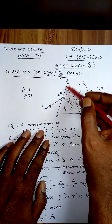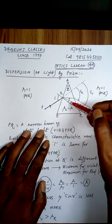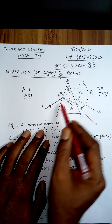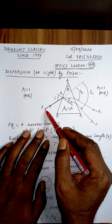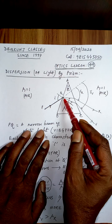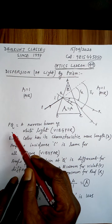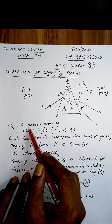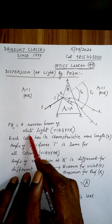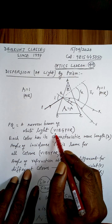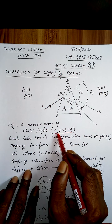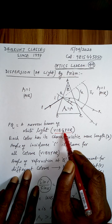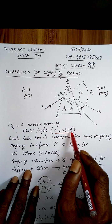To the side PB, this line is the normal. PQ is an incident ray — a narrow beam of white light consisting of the seven colors: violet, indigo, blue, green, yellow, orange, red, incident on the prism.